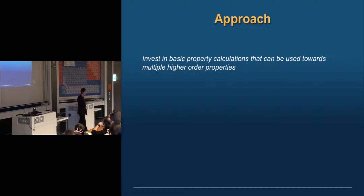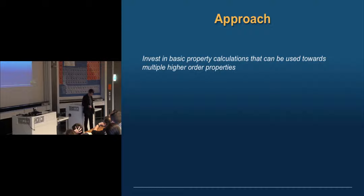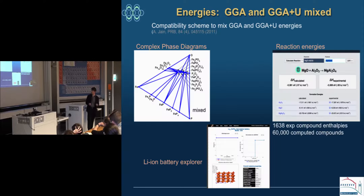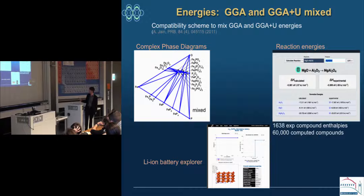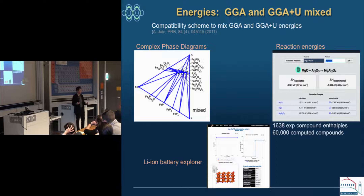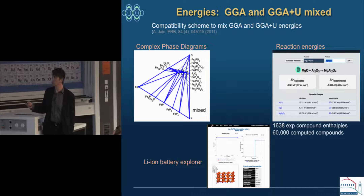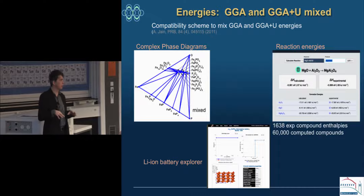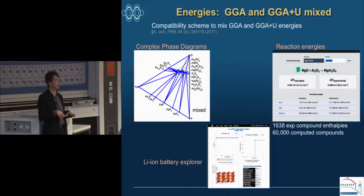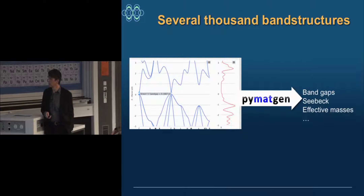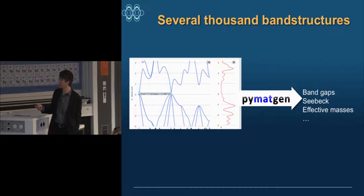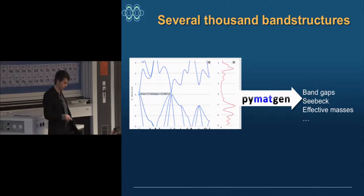Our approach has been to invest in property calculations from which we can leverage a lot of behavior. If you calculate energy, you can do ground-state phase diagrams, calculate reaction energies, and even battery voltage — because battery voltage is essentially energetics of reactions. We spent a lot of time figuring out how to combine multiple functionals so we could work in different chemical domains with high accuracy, building essentially the largest database of calculated formation enthalpies. Similarly, we did band structures, leading to band gaps, Seebeck coefficients, and effective masses.